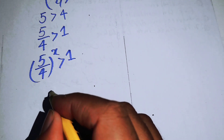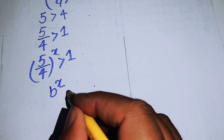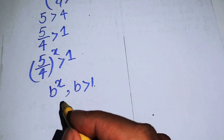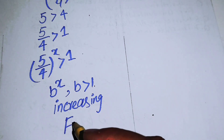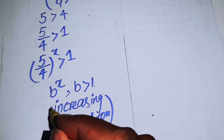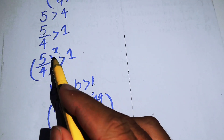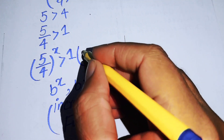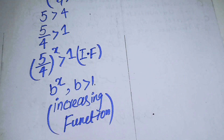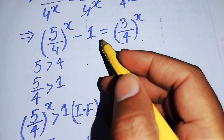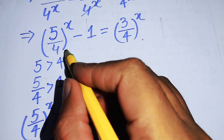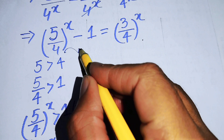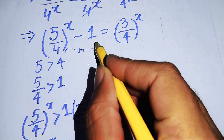We use the important fact that if b^X and b is greater than 1, then b^X is an increasing function. Since 5/4 is greater than 1, (5/4)^X is an increasing function. Subtracting the constant 1 from an increasing function keeps it increasing, so the left-hand side is an increasing function.